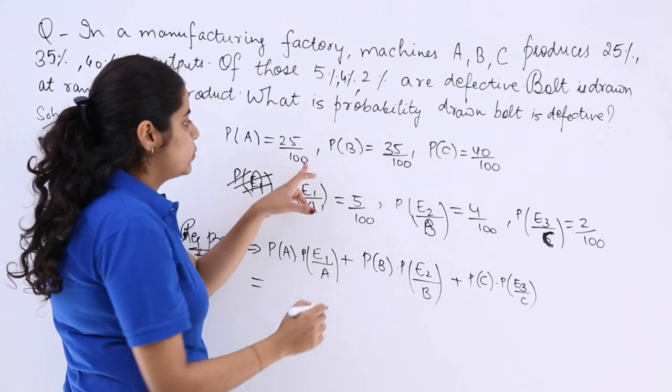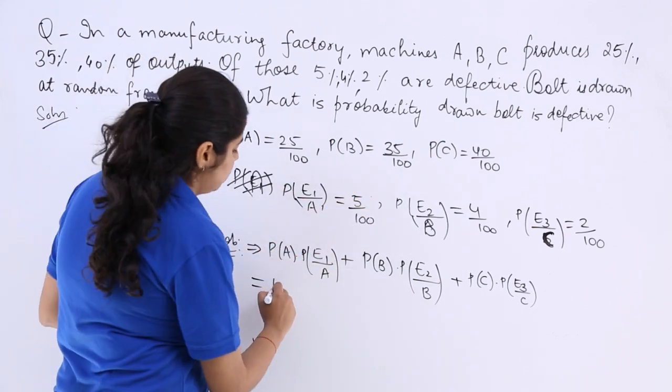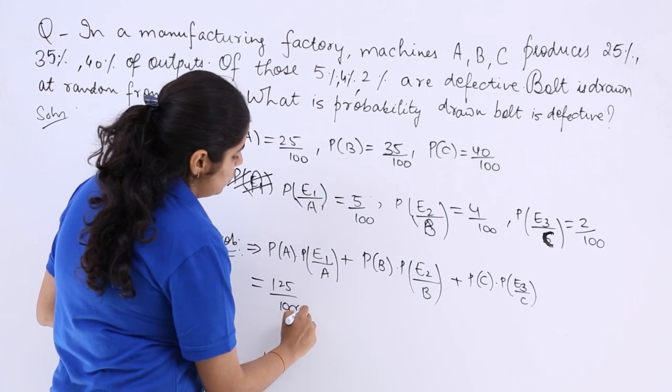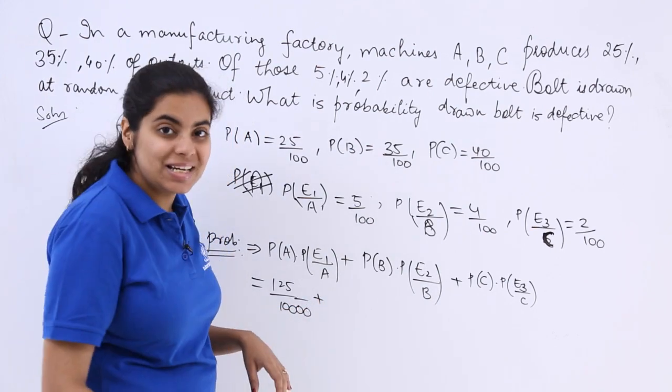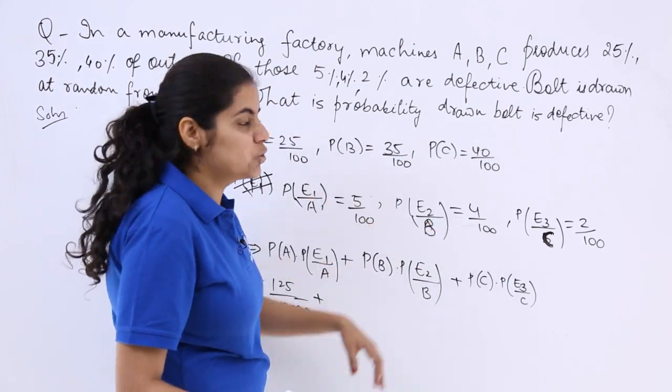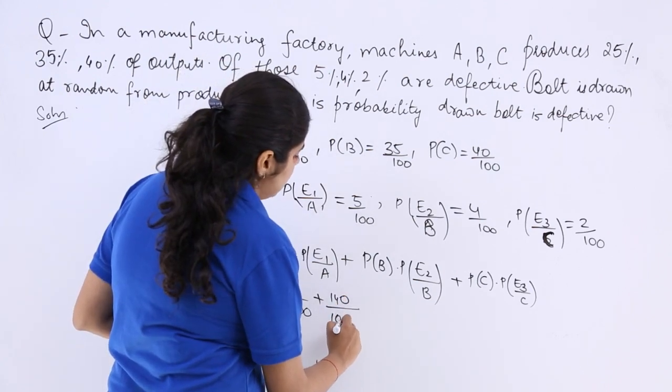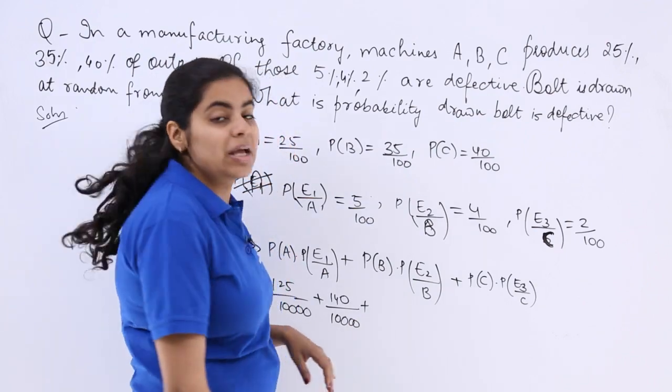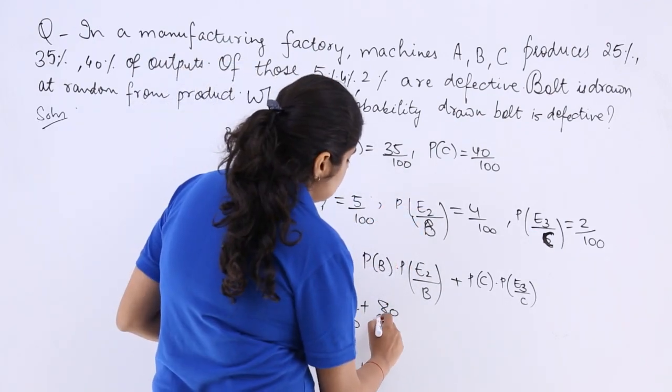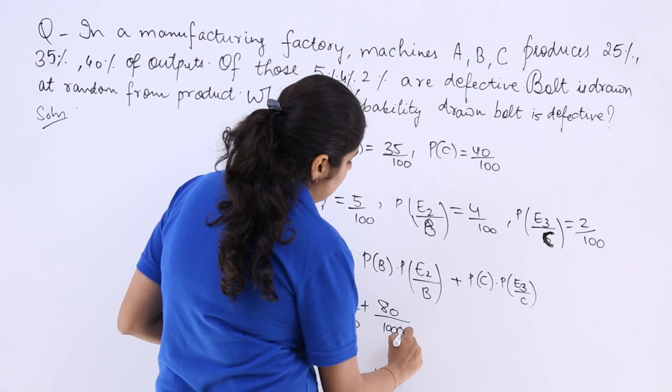Now, what should be the answer like? 25 into 5, which is 125 by 100 into 100, plus 35 into 4, which is 140 divided by 100 into 100, plus 40 into 2 is 80 divided by 100 into 100.